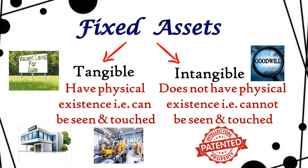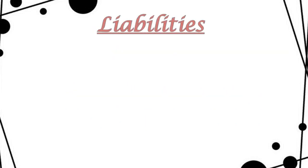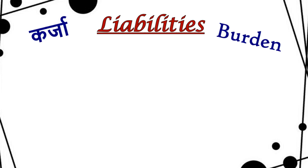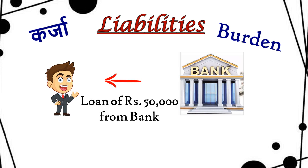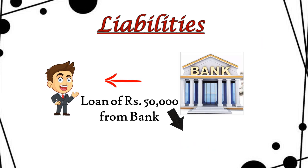After Mukesh started his business, he needed some money so he took a loan from the bank of rupees 50,000. This 50,000 that Mukesh's business has taken — it has to be repaid. It is a kind of burden on the business, a debt that has to be paid back. So this 50,000 is called a liability.